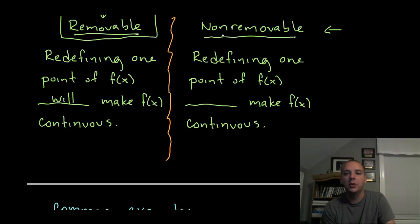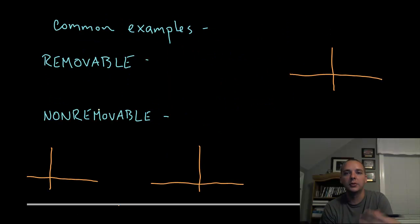Now there is another type where if you redefine one point it will not make f(x) continuous. No matter how you define that one point where the discontinuity is, that discontinuity is non-removable, it's not fixable. Now there's three places that we often see these types of discontinuities, let me run through them real quickly.